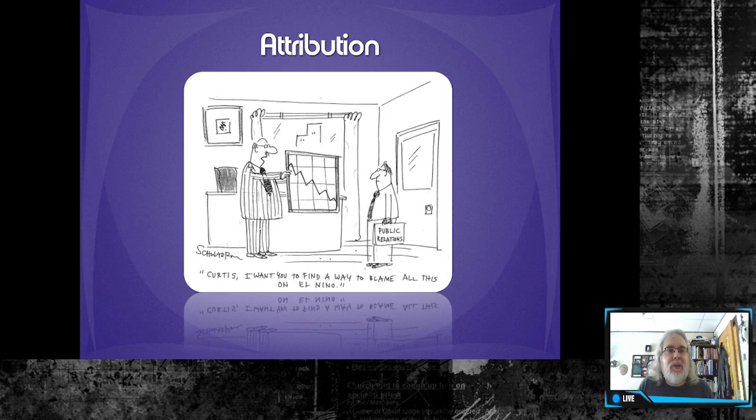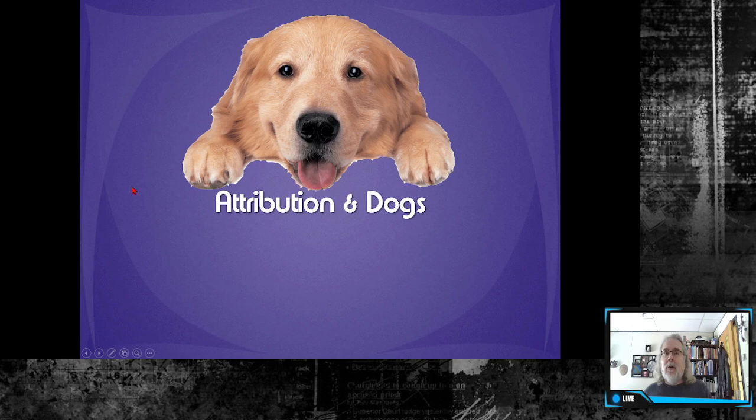In this video we're going to be focusing on what an attribution is and look at the two different types of attributions. At its heart an attribution is an explanation, and that really is what it is. We're looking at an explanation of behavior. Why did something happen? So the explanation could be about your own behavior or somebody else's behavior.